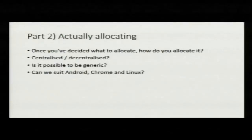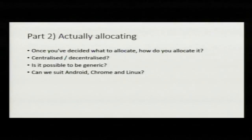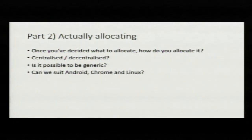So part two: once you've decided where you want to allocate your buffer and what kind of buffer you want to allocate, how do you get hold of the memory? Should it be centralised like Ion, or decentralised like DRM plus V4L2 plus whatever else? Can we make something generic, and can it suit all operating systems? That's a question.